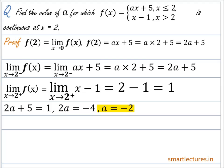So the value of a for which the given function f(x) = ax + 5 if x ≤ 2, and f(x) = x - 1 if x > 2, is continuous at x = 2 is a = -2.